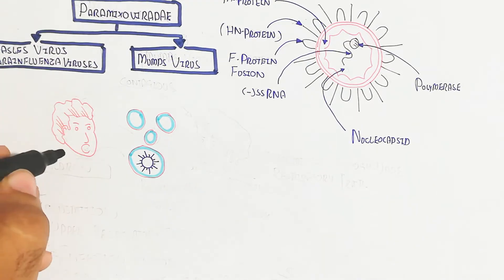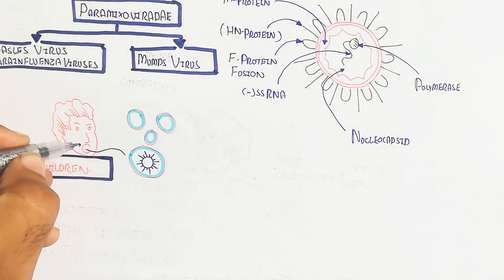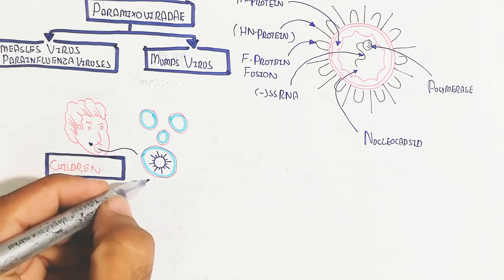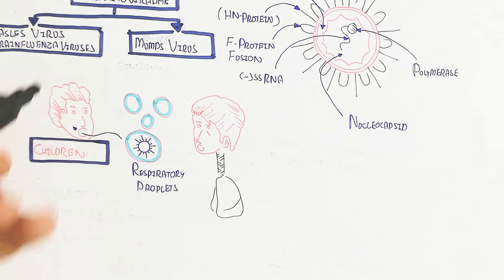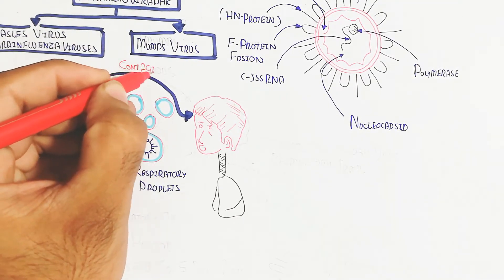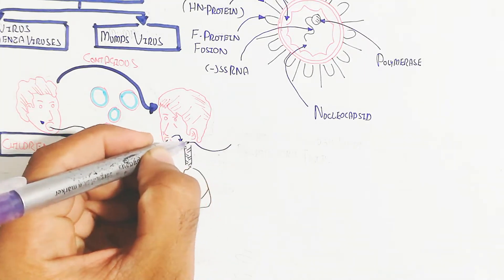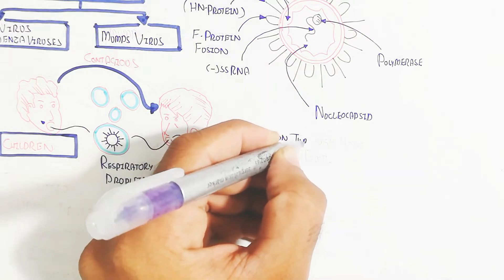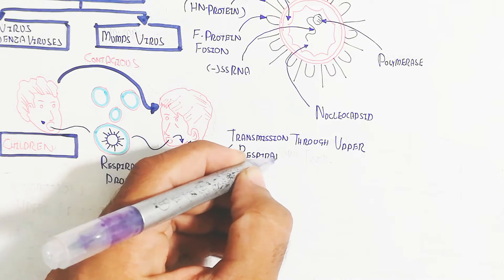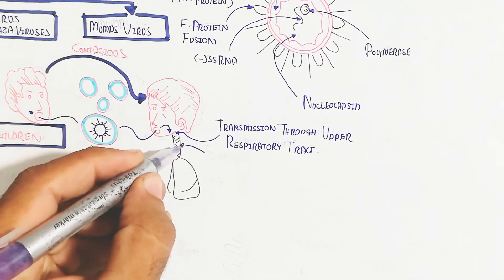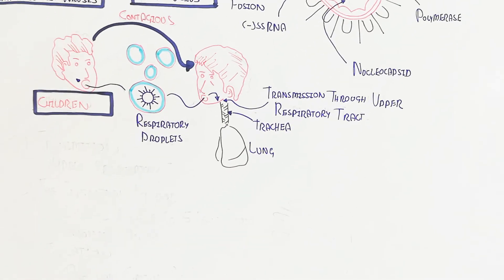This is for children. The respiratory droplets can move inside and bind through transmission in the upper respiratory tract because its concentration is more dense. This is the trachea and lung of the person, the children, and it is contagious person to person, infects easily. The respiratory droplets can also move during breathing.